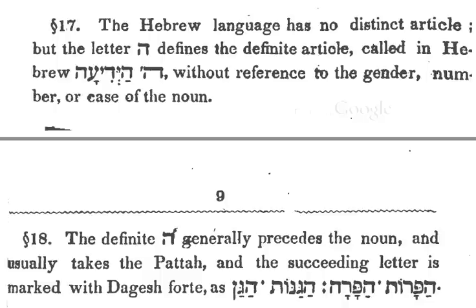...generally precedes the noun — it goes in front of it — and usually takes the vowel patah. The succeeding letter, the following letter, is marked with the dagesh forte. In other words, when the He is there, the following letter is in the syllable with the He.